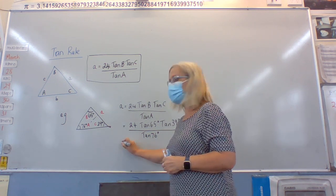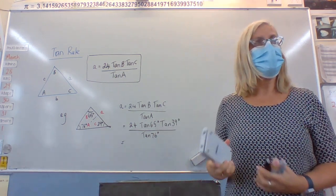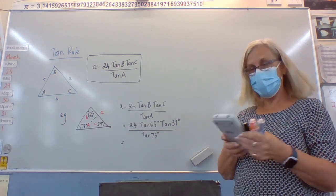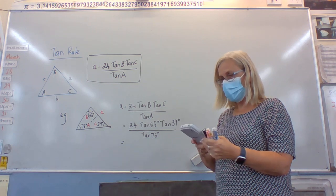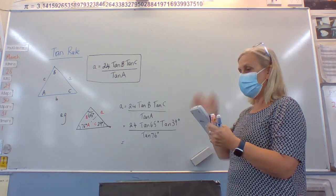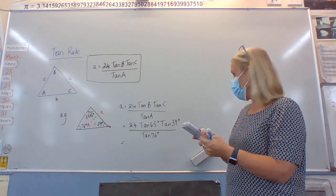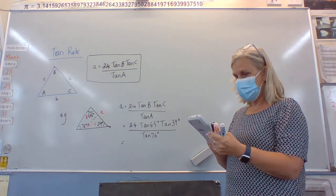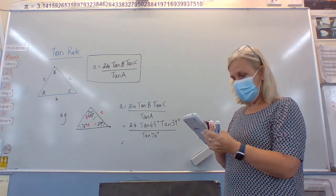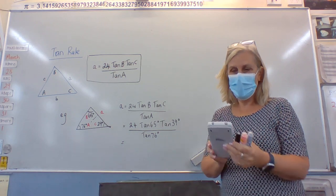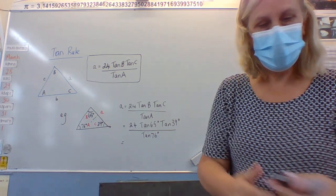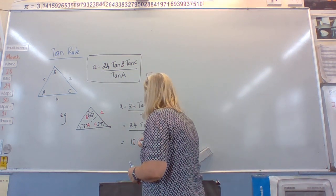So what does that equal? Calculator. Well, it's a special number — I'll have to look that up. You always got 24. So: 24, tan 65, times tan 39, equals, divided by tan 76, equals... I'm in radians here. 10.39. 10.39. So 10.39 — what is the answer?